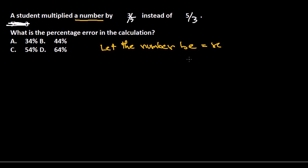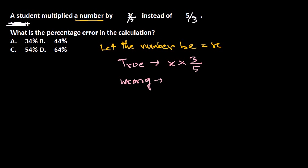Once you know the number is x, the rest is easy because you know the error. Normally, what we need to calculate — the true thing — is x × (3/5). But the wrong thing the student calculated is x × (5/3). That's the mistake he made.